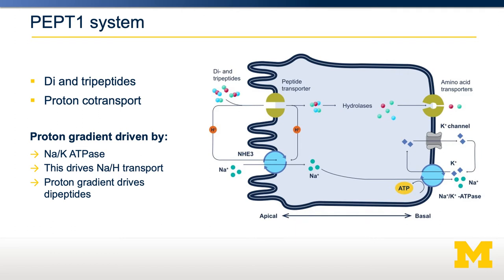Once inside the cell, the di- and tripeptides are further broken down into free amino acids. Those free amino acids are then transported across the basolateral membrane into the blood. There is no PEPT1 on the basolateral membrane of most enterocytes. With 20 different amino acids, we can't rely on just a single transporter to move all these amino acids into the enterocyte, across the enterocyte, into the blood, and then from the blood back into our target tissues.